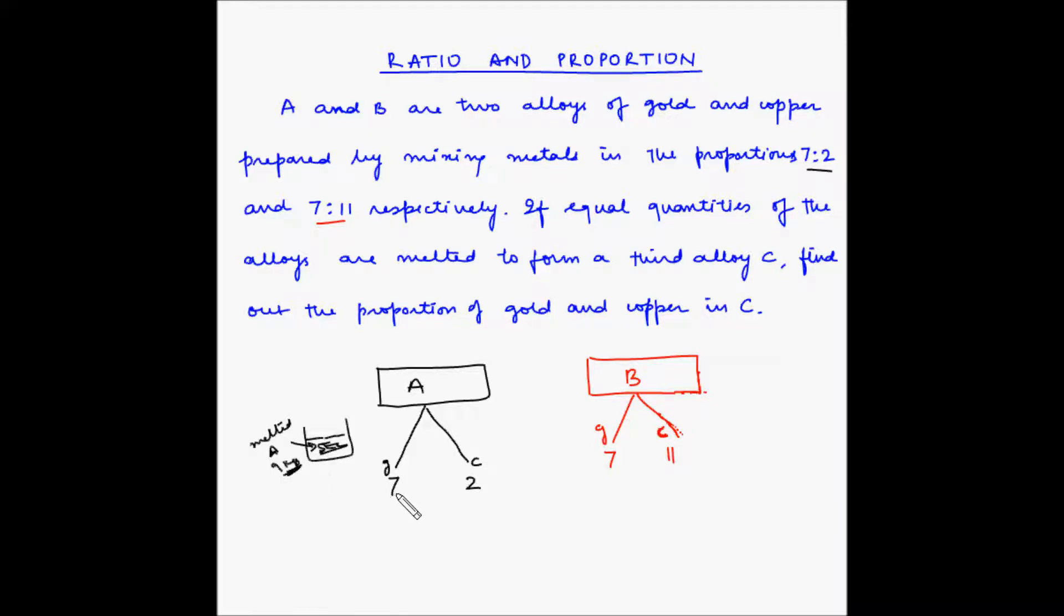Out of 9 kgs, 7 kgs is gold and 2 kgs is copper. This is made up of 7 kg gold and 2 kg copper.